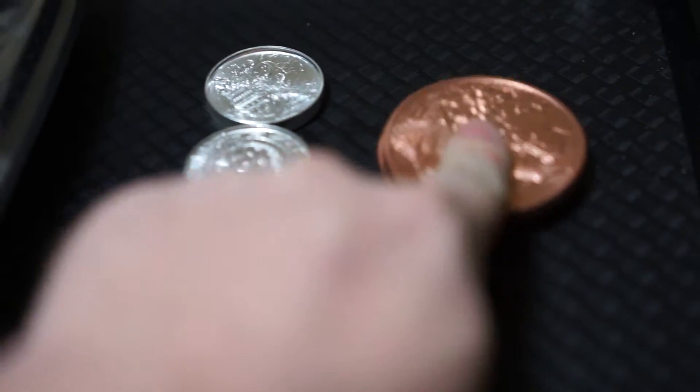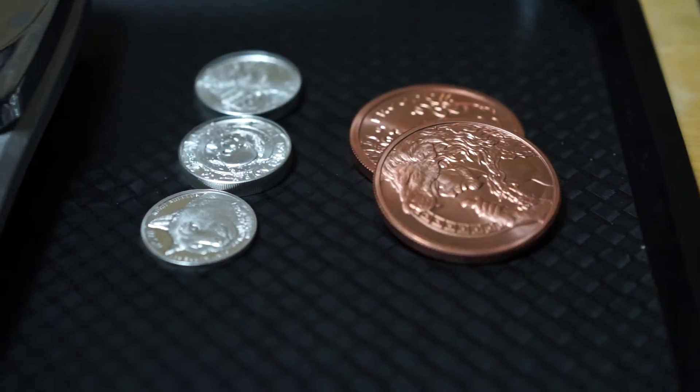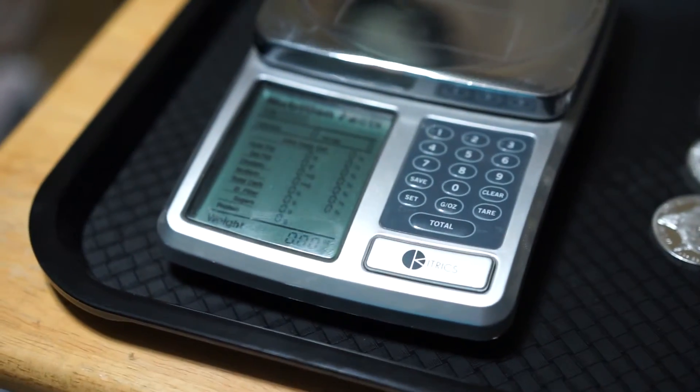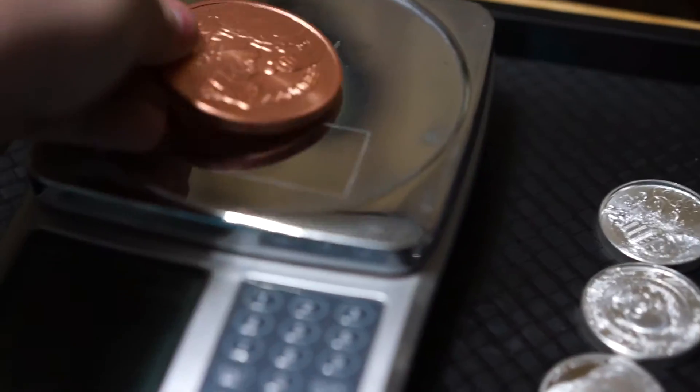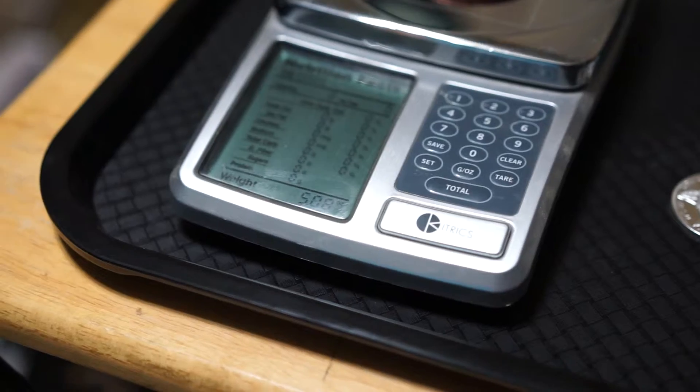And each of these are five ounces of copper. So we're going to weigh them on the kitchen scale. Here we are at zero, and we drop it on. What do we got? Five point... almost nothing.